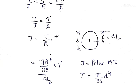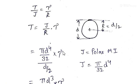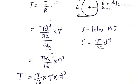Substituting J = πd⁴/32 and r = d/2, with τ as is, and simplifying, we get T = πd³/16 × τ, or rearranging: T = π/16 × τ × d³.